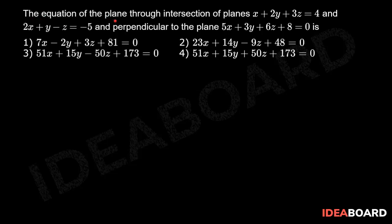The equation of the plane through the intersection of planes x + 2y + 3z = 4 and 2x + y − z = −5, and perpendicular to the plane 5x + 3y + 6z + 8 = 0, is?